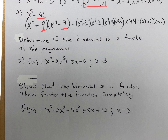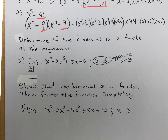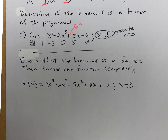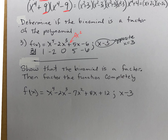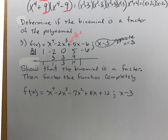Determine if the binomial is a factor of the polynomial. We put positive three in the box — remember, opposite sign. So x equals three. My coefficients are one, zero — don't forget that zero because x squared is missing — five, and negative six. We're looking for a remainder of zero. Bringing down: 1, times 3 is 3, negative 2 plus 3 is 1, times 3 is 3, zero plus 3 is 3, times 3 is 9, five plus 9 is 14, times 3 is 42, negative 6 plus 42 is 36. That is not zero, so it is not a factor.